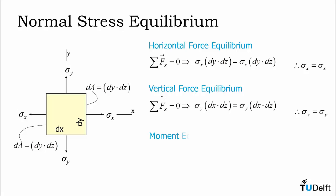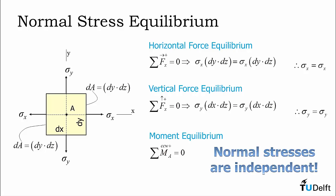Now we have one last equilibrium to look at, and that's moment equilibrium. However, this is trivial for this problem in the sense that we can pick a point A in the center of the element through which all of the resultant forces act, and if we take the sum of the moments about this point, it's automatically equal to zero. Thus we conclude that normal stresses are independent.